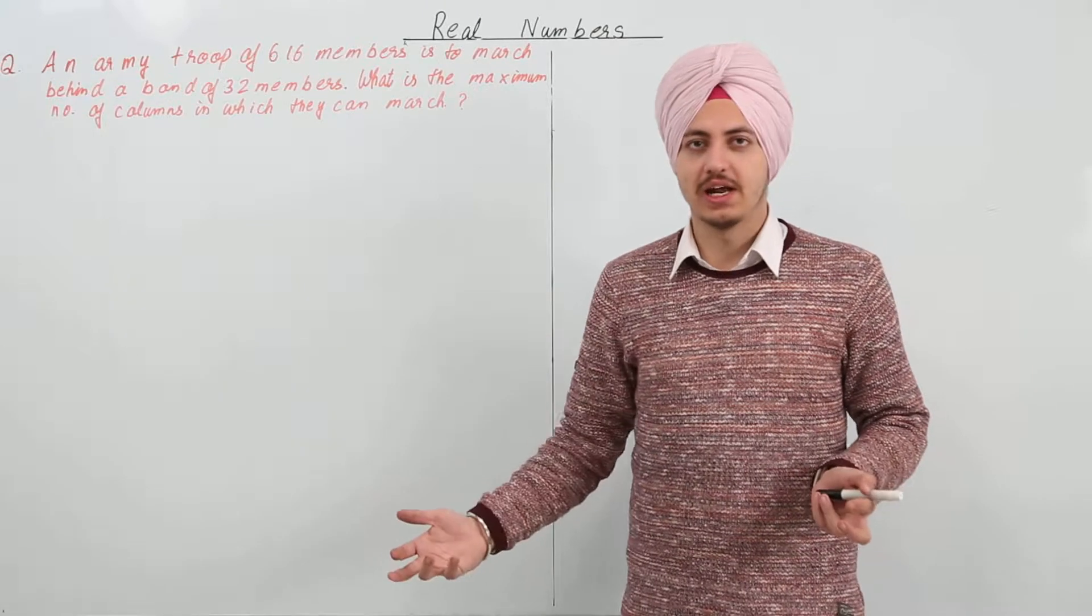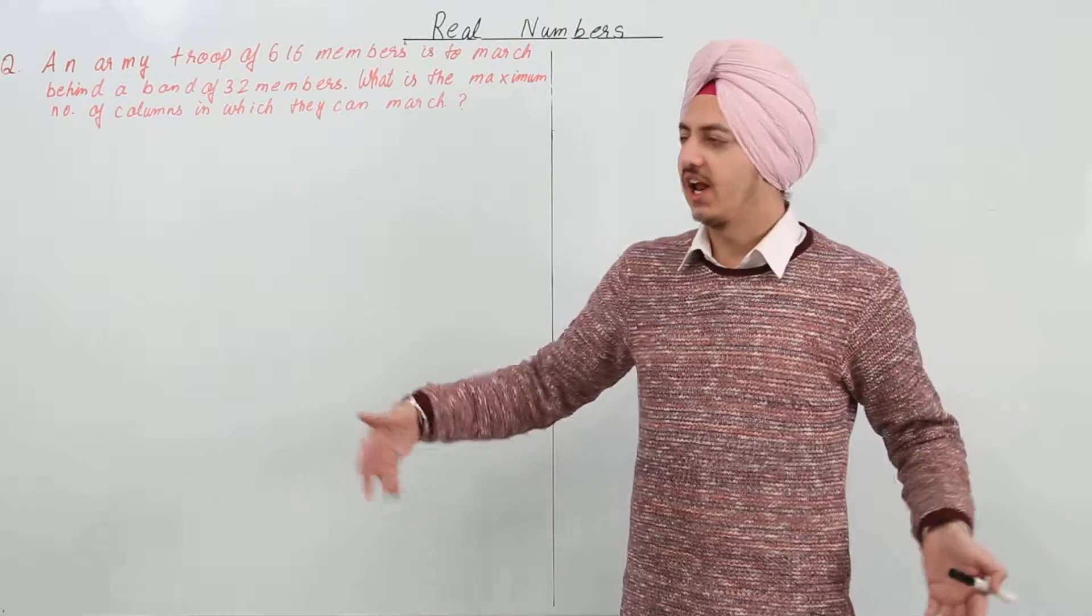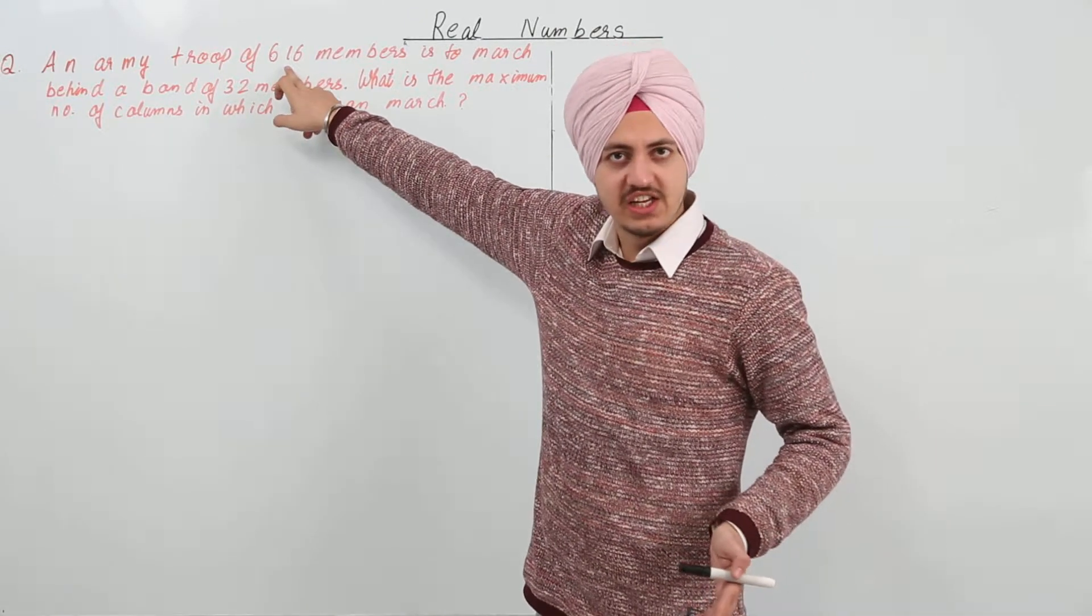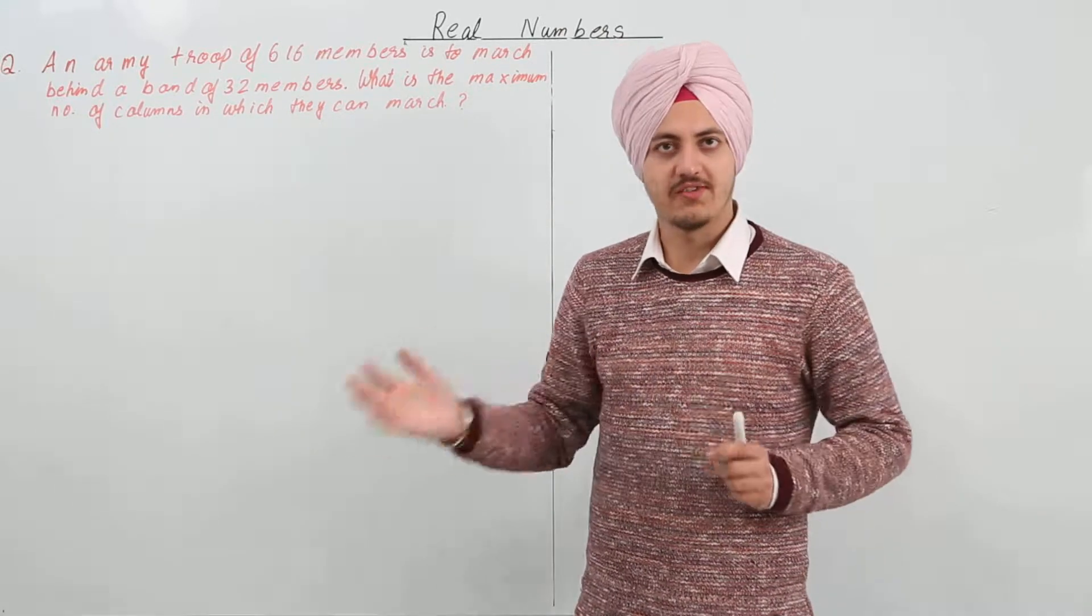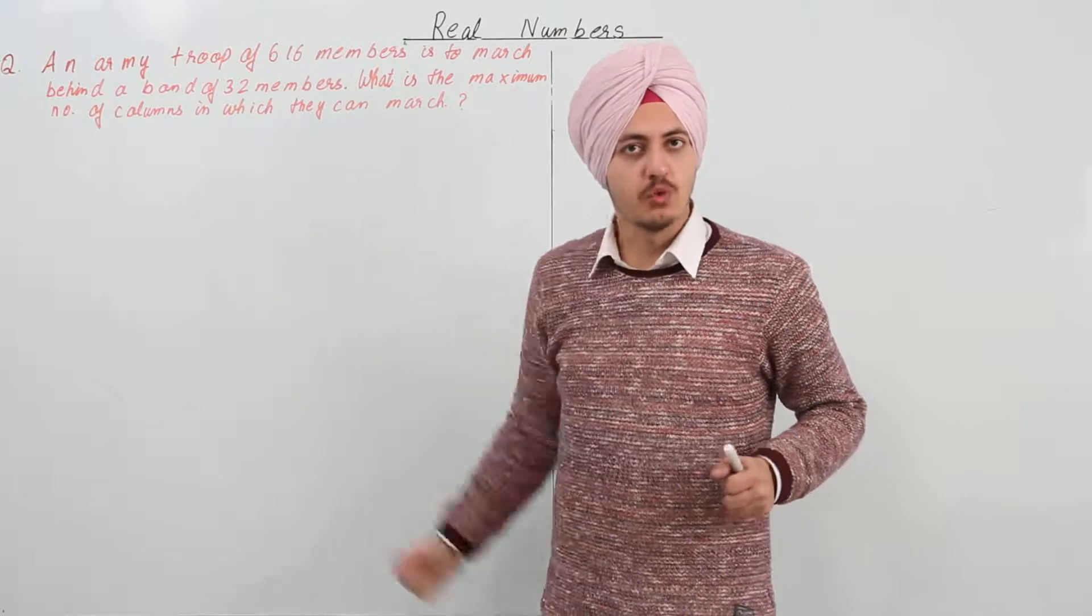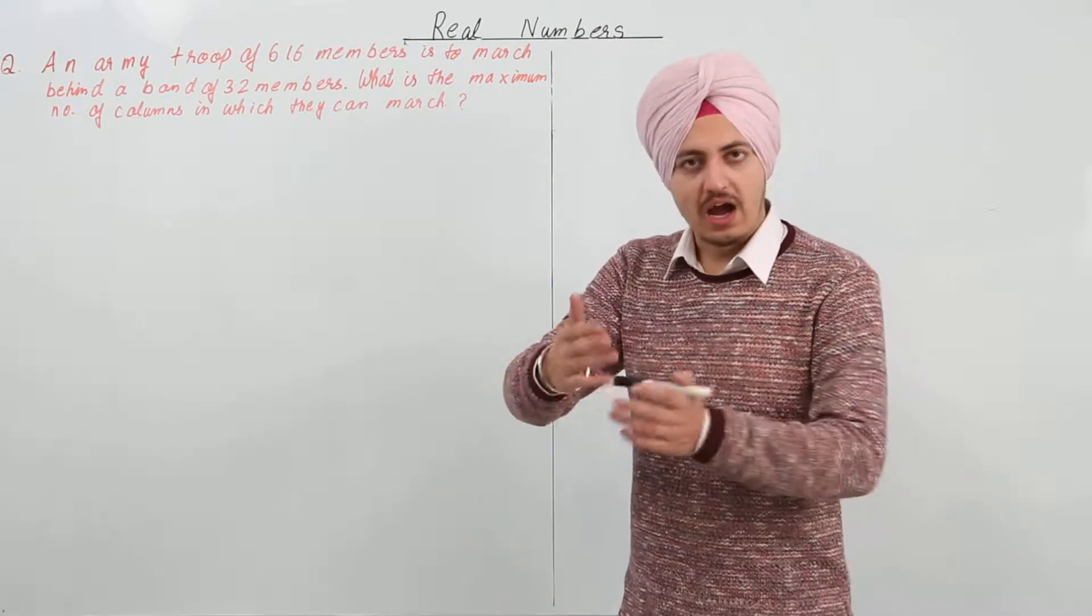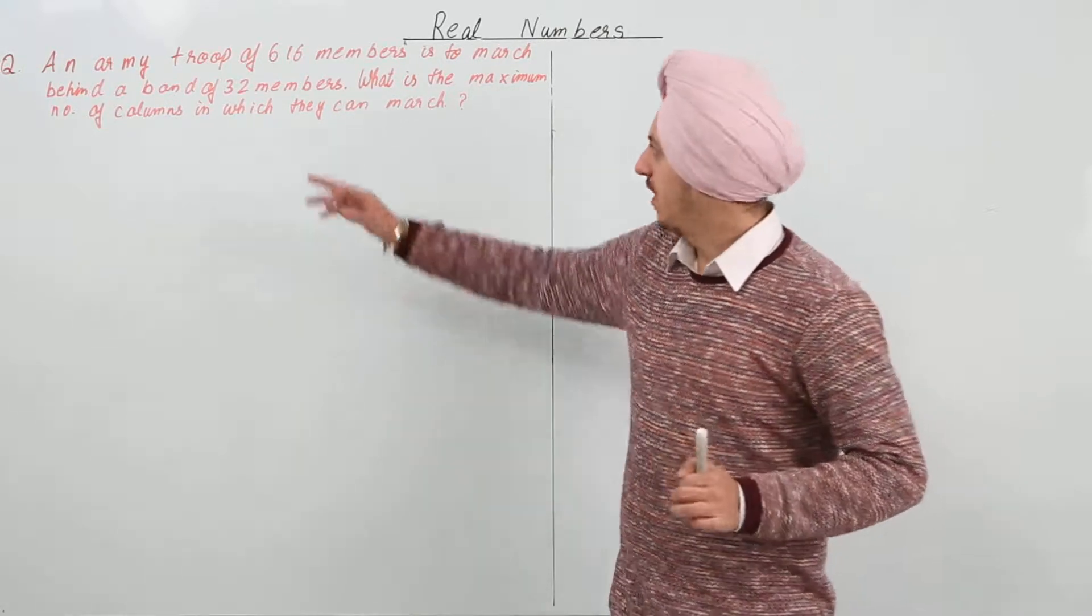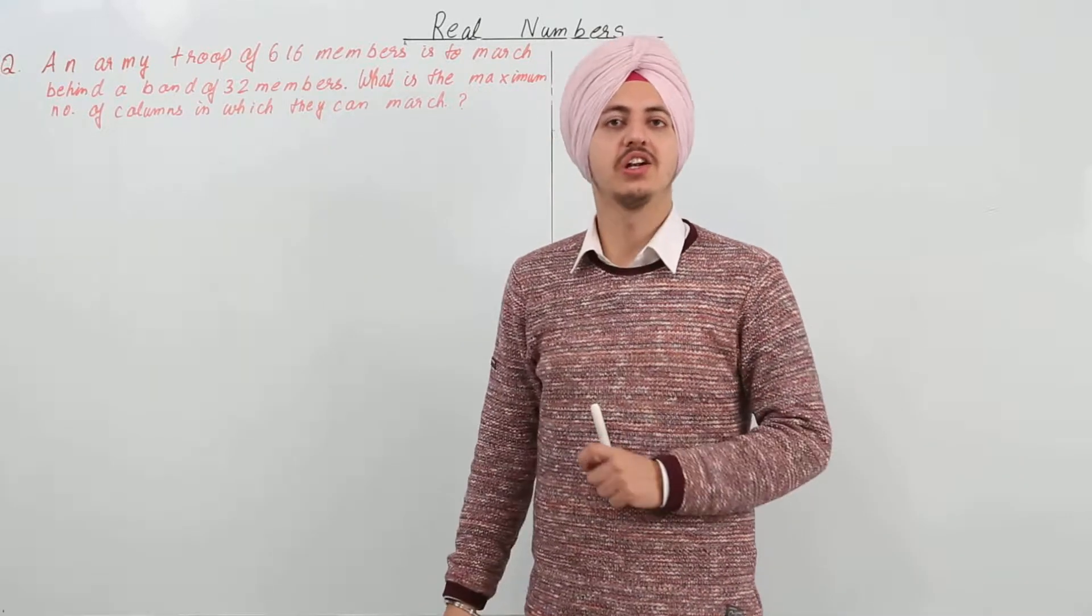So either we can do it by hit and trial like I'll say make 10 lines. So in those 10 lines there will be 30 of these and 610 of these, and then two members for the band are left behind and six members of the troops are left behind. Now I'll say take 12. So I can do it by hit and trial or this can be done by taking the HCF of 616 and 32.